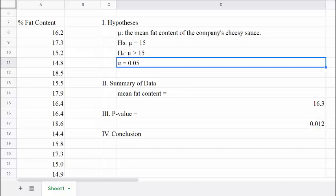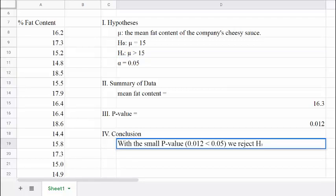Since this p-value is less than our significance level of 0.05, we are going to reject the null hypothesis. And we conclude that the fat content of this company's cheesy sauce is actually higher than 15%.